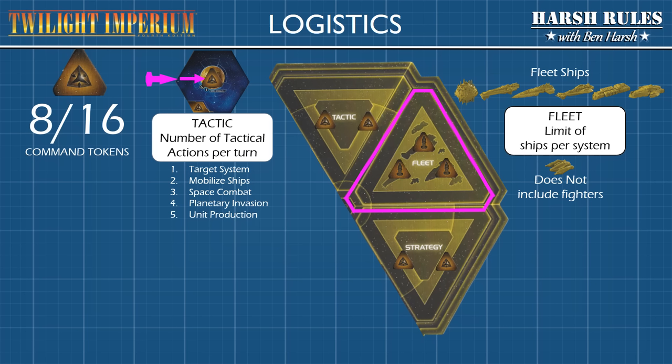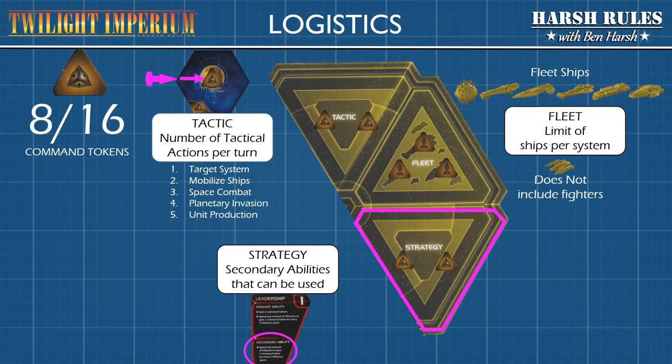If, at the end of a player's turn, their fleet size in any system exceeds their fleet limit, they must destroy their own ships until they meet that limit. The limit at the start of the game is three ships per system, not counting fighters. Finally, we have the Strategy space. Command Tokens in the Strategy space equal the number of times a player may execute the secondary strategy on a strategy card. At the beginning of the game, a player can execute two secondary strategies.